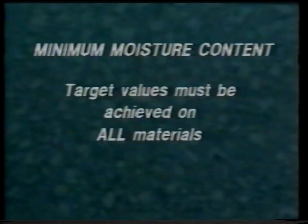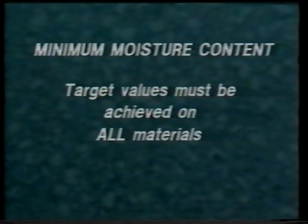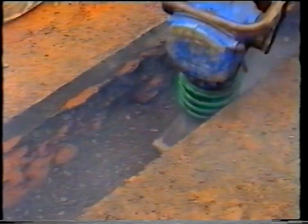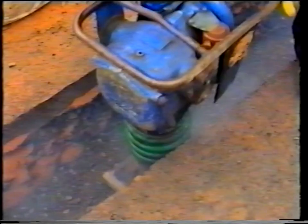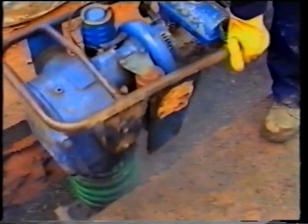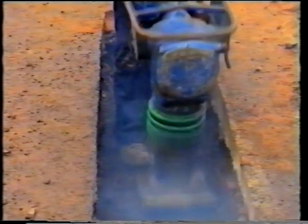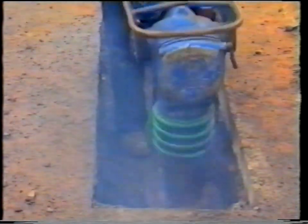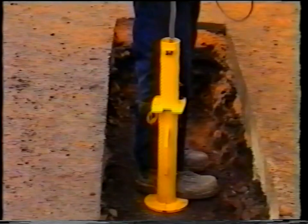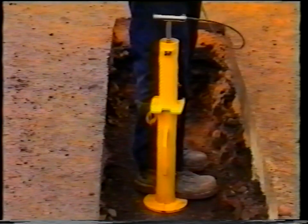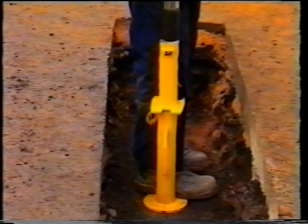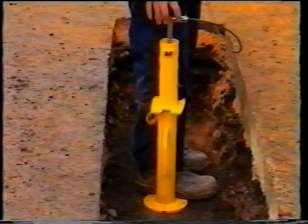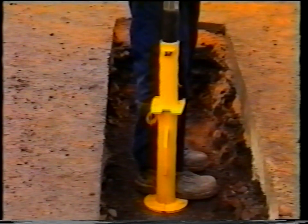Materials compacted near the minimum acceptable moisture content must, however, achieve the target values. Compaction should always be carried out according to the reinstatement specification. If target values are not achieved, further compaction of layers can improve target values, but often it will be necessary to re-excavate down to the last layer where acceptable values were observed. If target values are achieved before the required number of passes have been applied, it is still necessary to apply the remainder of compaction passes.